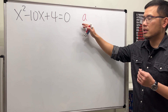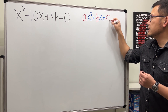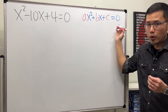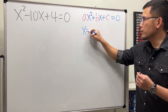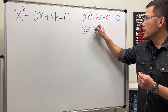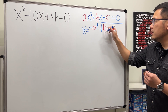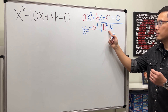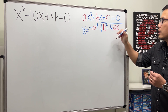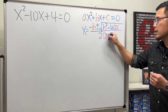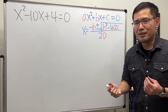We must have the equation in the form ax² + bx + c = 0 — this is the standard form of a quadratic equation. Then the formula says x equals negative b, plus or minus the square root of b² minus 4ac, all over 2a. If you'd like to know how we derive this formula, I have done a video on that as well — the link will also be in the description.